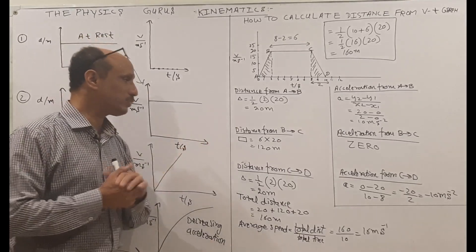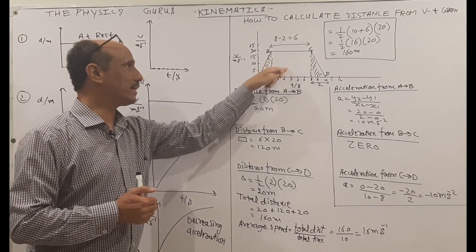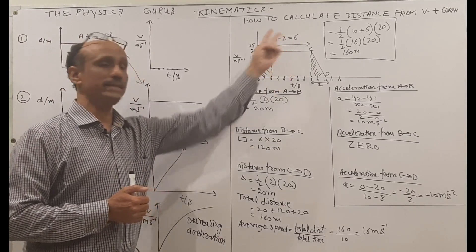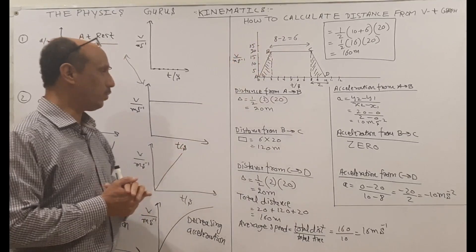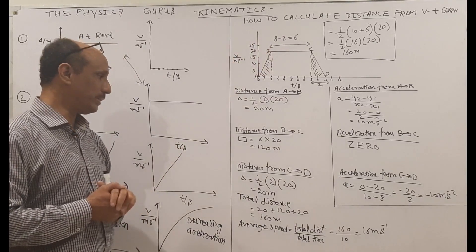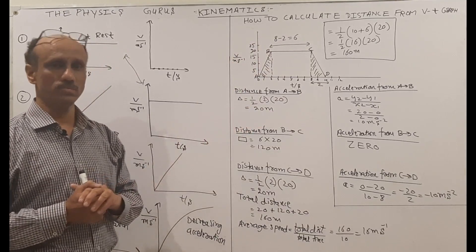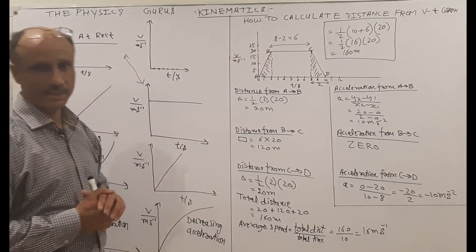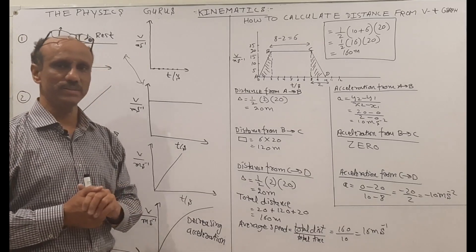The distance from B to C: the shape is a rectangle. The value from B to C is 6, and we already have 20, so the answer is 120 meters. The acceleration for B to C is 0. Write down in the comments why the acceleration from B to C is zero.